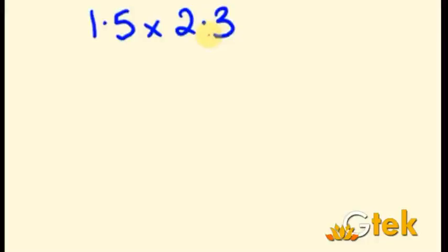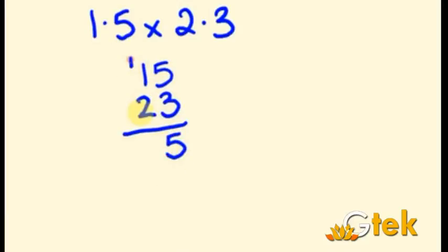So we have to do multiplication normally in the initial stage. That is we have to do multiplication for 15 into 23. So 5 times 3 are 15, right? So we are going to mention it as 5 in the unit place and 1 is carried over. Then 3 times 1 are 3 and it is going to add up with the carried over.